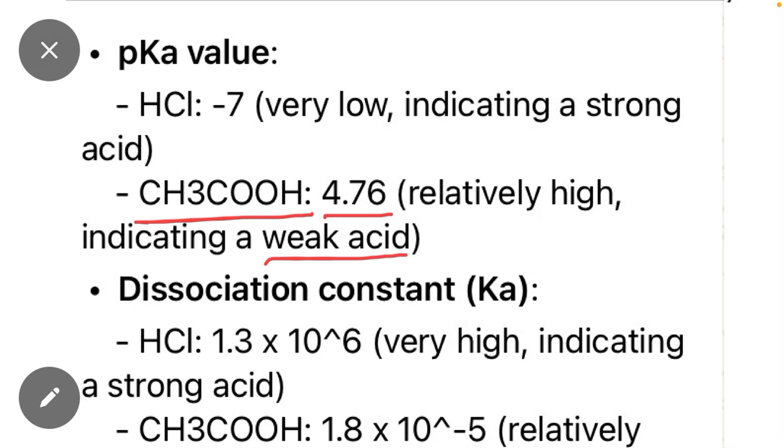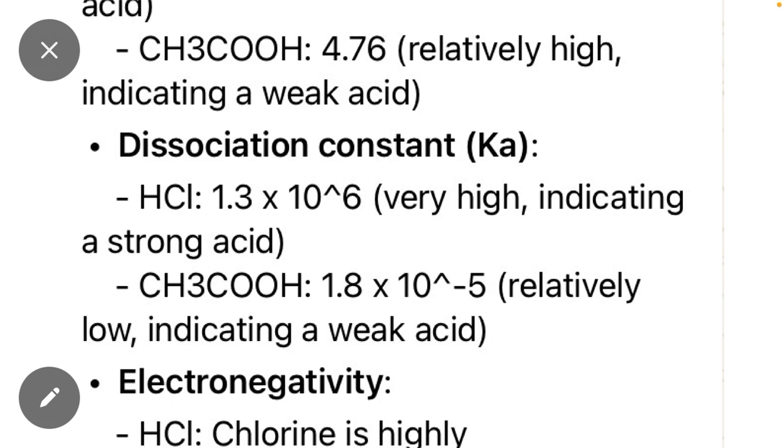Acid dissociation constant value: we read that if any acid has a greater Ka value, it will be a strong acid. For HCl, 1.3 times 10 to the power 6, and for CH3COOH, 1.8 times 10 to the minus 5. This relatively low value indicates it is a weak acid.